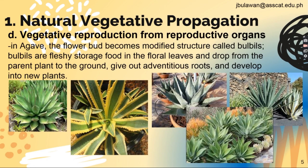Letter D: vegetative reproduction from reproductive organs. An example is agave, where the flower bud becomes a modified structure called bulbils. Bulbils are fleshy food storage structures in the floral leaves that drop from the parent plant to the ground, give off adventitious roots, and develop into new plants.